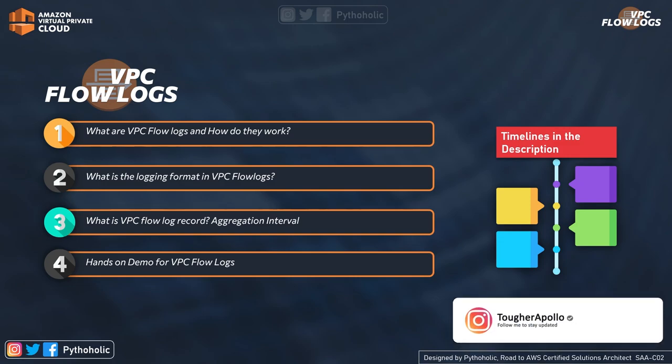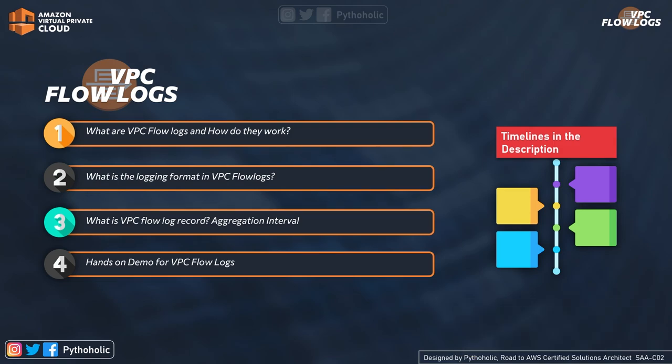In today's episode on flow logs, we will be talking about what VPC flow logs are and how they work, what the logging format is, what a VPC flow log record is, and what an aggregation interval is. We'll also do a short hands-on demo for VPC flow logs. All the links are in the description below, so please make sure you check them out.